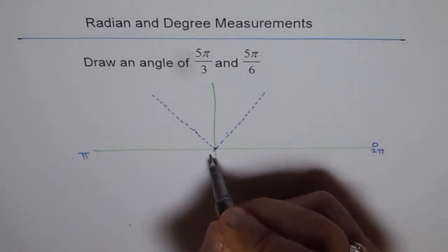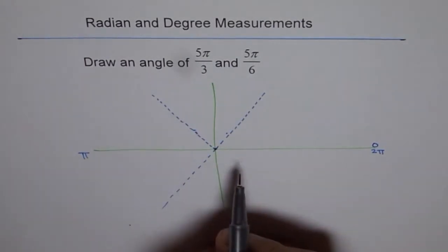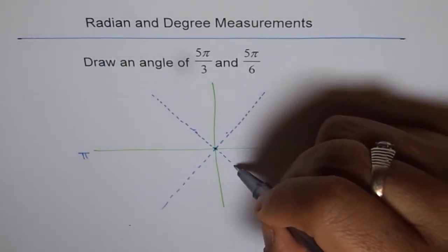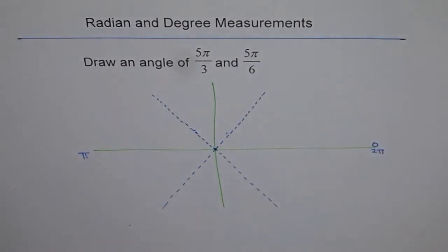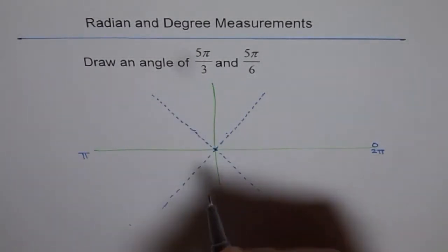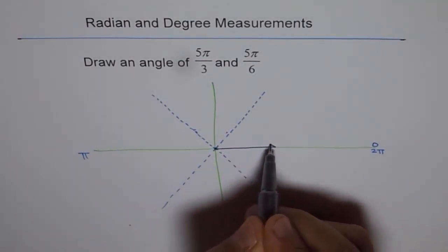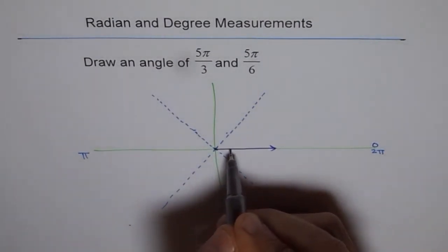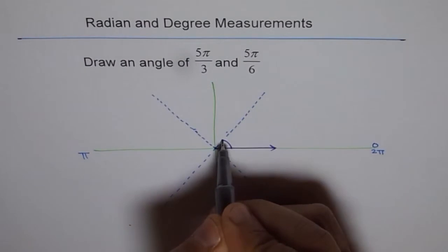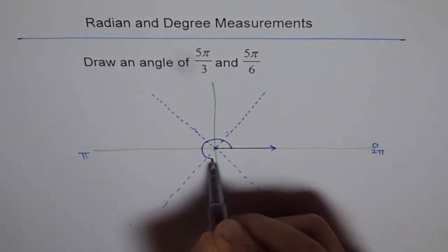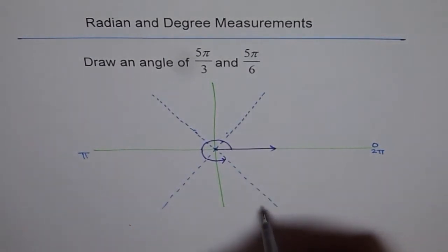So let's extend this. And let's extend this one also. Now we have each division which is π/3. So 5π/3 means what? 5π/3 means let's start with the initial arm here. So that's our initial arm. And from here we go 1π/3, 2π/3, 3π/3, 4π/3 and 5π/3. So that is our 5π/3.